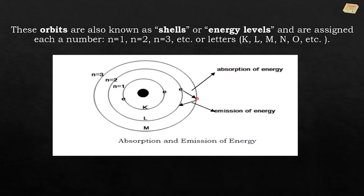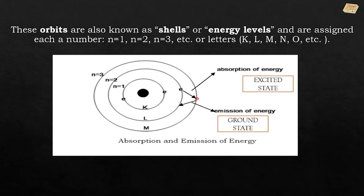If an electron receives extra energy or absorbs energy, it can jump into a higher energy level — this is called the excited state. The electron in the excited state can return to its lower energy level, or ground state, by releasing a discrete amount of energy in the form of light emission.